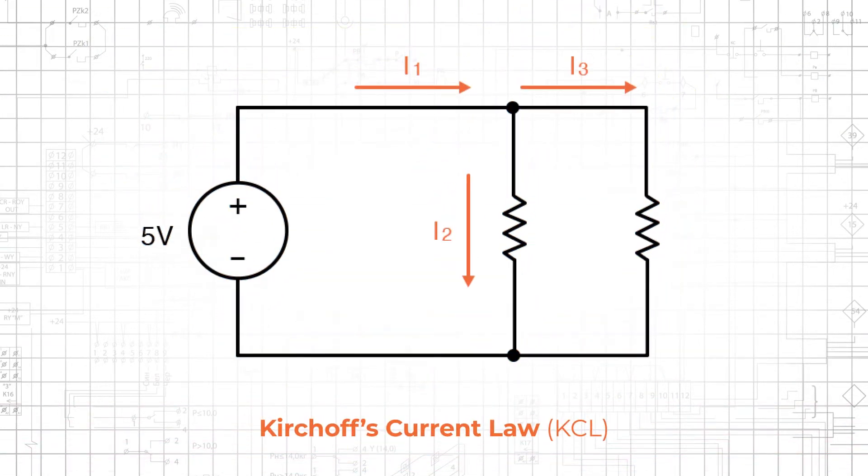Kirchhoff's current law, abbreviated KCL, states that the total current entering a node is equal to the total current exiting a node. KCL allows us to use known currents to determine an unknown current.